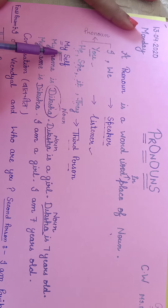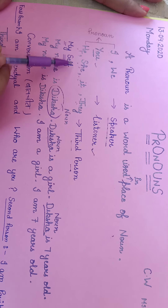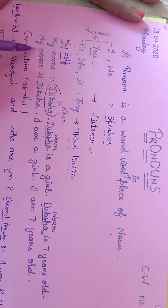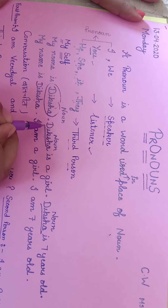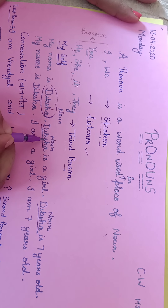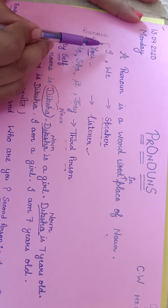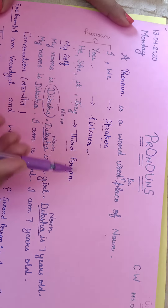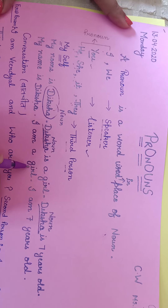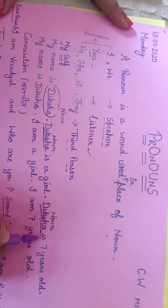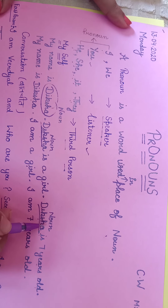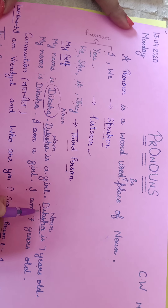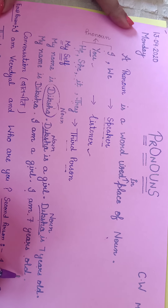Here, I am talking about myself, so here I am talking about the speaker. My name is Diksha. We will replace Diksha by the pronoun 'I'. You are talking about yourself, so: I am a girl. Diksha is seven years old — here again I replace Diksha with 'I': I am seven years old.